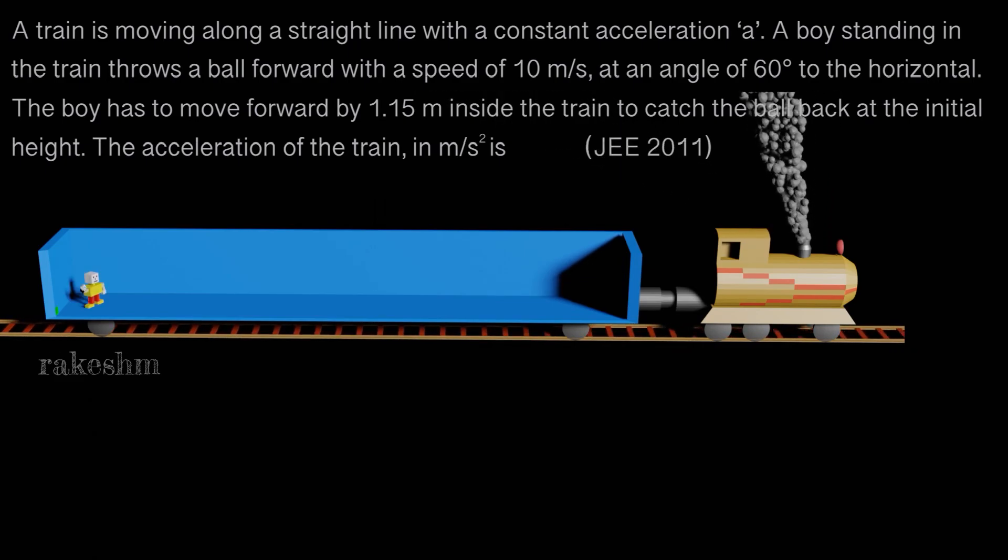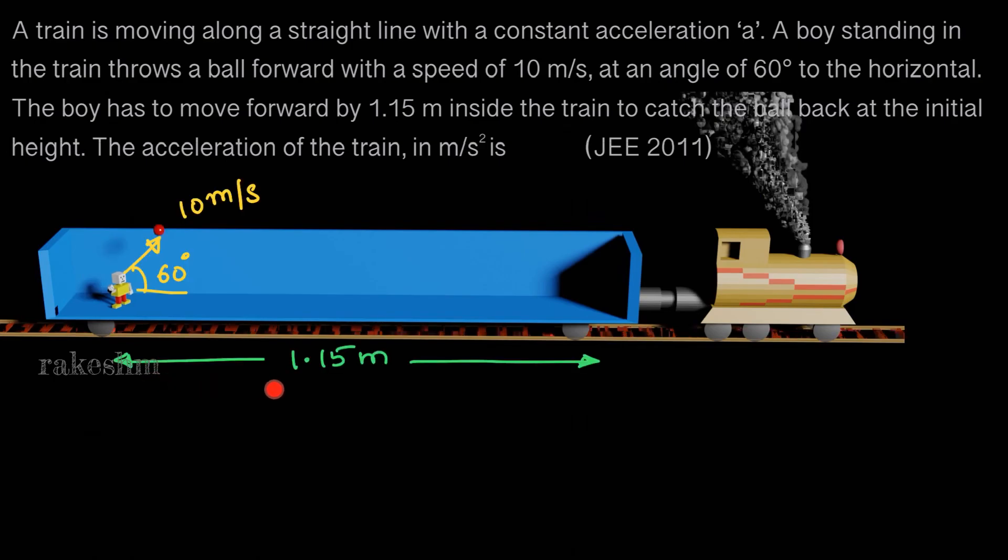So he throws the ball at 10 meters per second, 60 degrees to the horizontal, and he has to move forward by 1.15 meters to catch it.